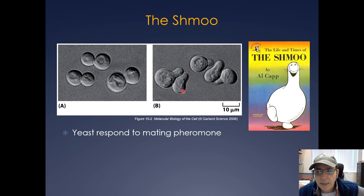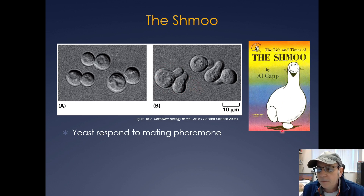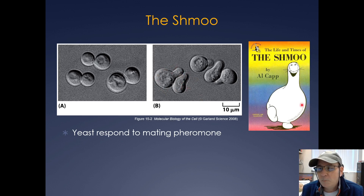This mating projection is what happens to yeast when it comes in contact with a mating pheromone, and it allows the A and the alpha strain to fuse and mate. The name SHMU actually came from a 1950s cartoon called 'The Life and Times of the SHMU' by Al Capp — you can see that the yeast resembles that cartoon character, and that's how it got its name.